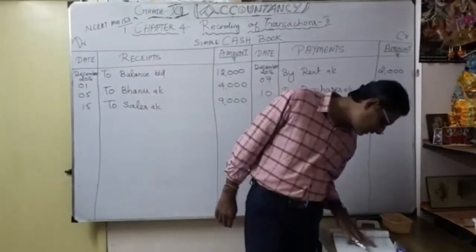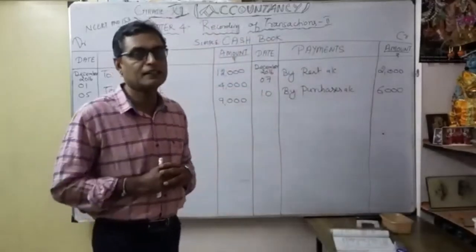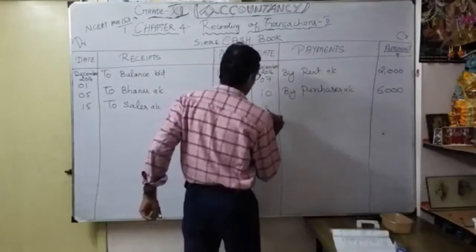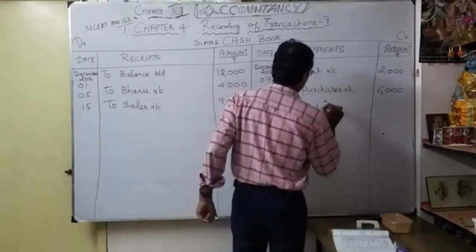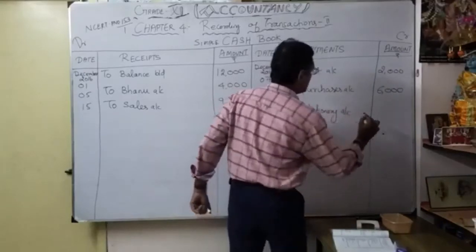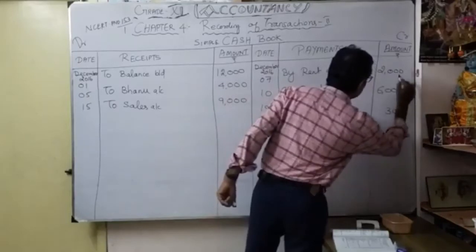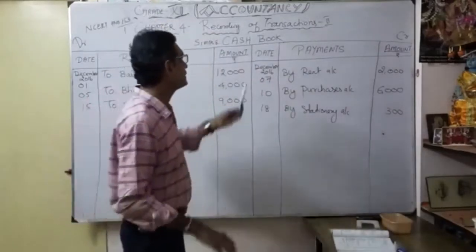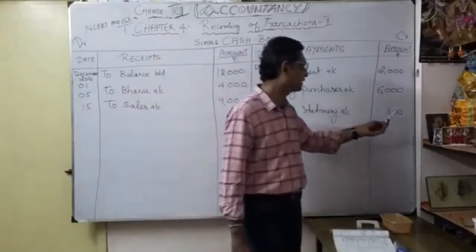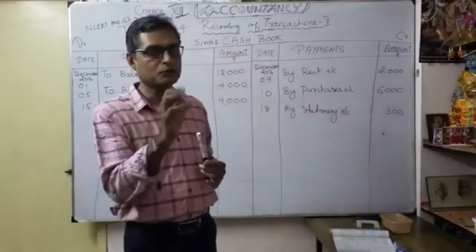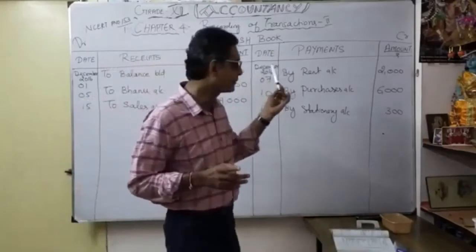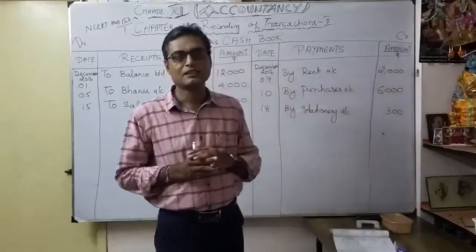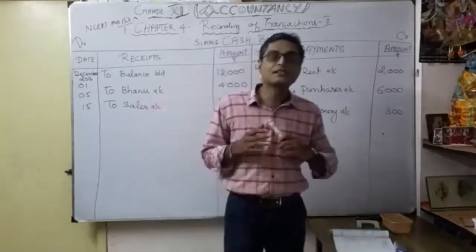Next: December 18th — purchased stationery 300. Entry: stationery account debit to cash account. So on the payment side, date is December 18th: 'By stationery account' 300. You have to write this carefully — 300. In the stationery account you write 'To cash account 300.' So in the cash book, credit side — payment side — 'By stationery account 300.'